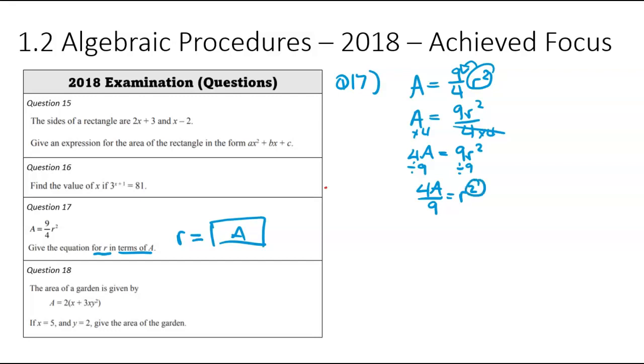After that, I'm now going to get rid of the square and do the square root of both sides. So I'll be square rooting and square rooting. So that means r is equal to the square root of 4A over 9. There is technically a bit more simplifying we can do here, but I'll leave it at that answer because it was an achieved question. They weren't expecting too much of us.